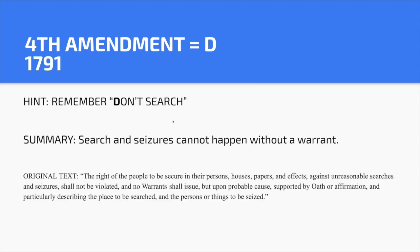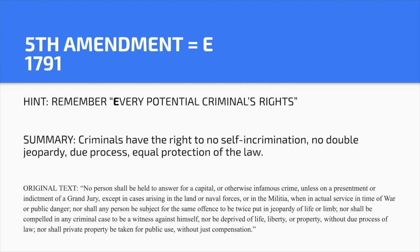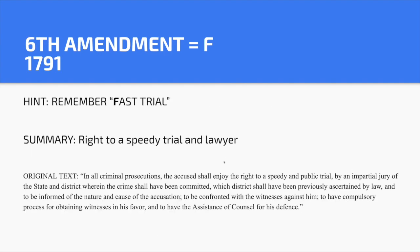Fourth Amendment — D. Hint: 'Don't search.' Search and seizures cannot happen without a warrant. Fifth Amendment — E. Hint: 'Every potential criminal's rights.' When you are accused of a crime, you have the right to no self-incrimination, no double jeopardy, due process of the law, and equal protection of the law.